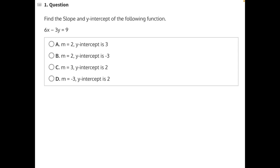Find the slope and y-intercept of the following function. In order to find the slope and y-intercept, we should put this into slope-intercept form, which looks like this: y equals mx plus b, where m is equal to our slope and b is equal to our y-intercept.